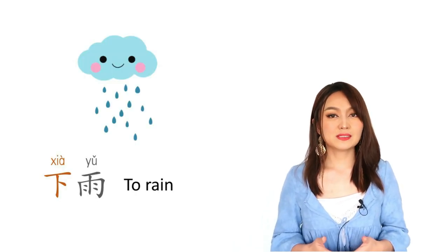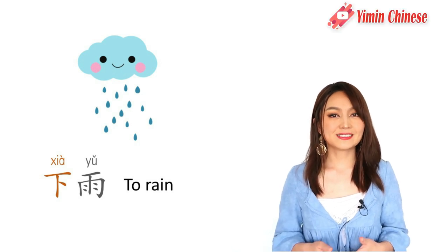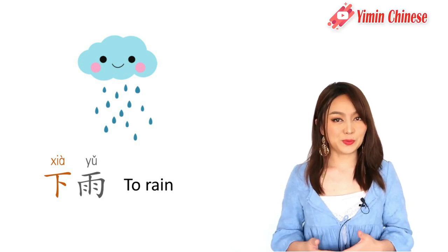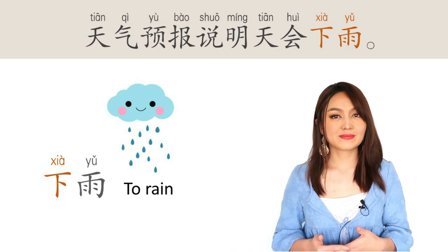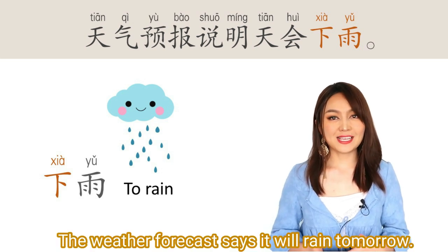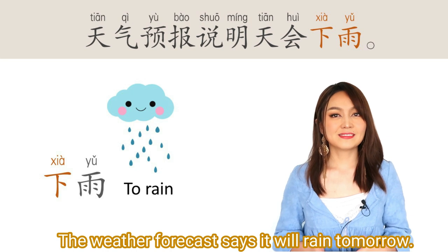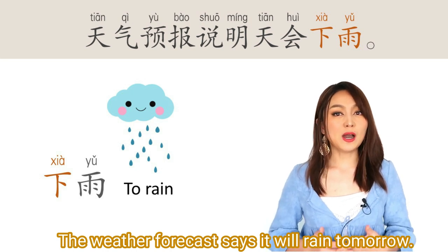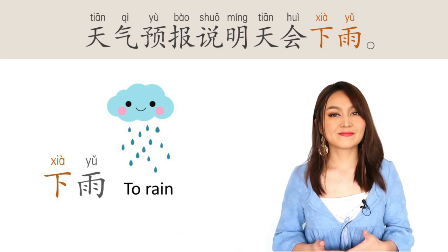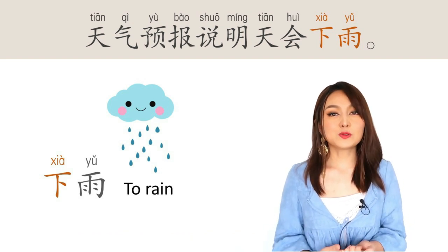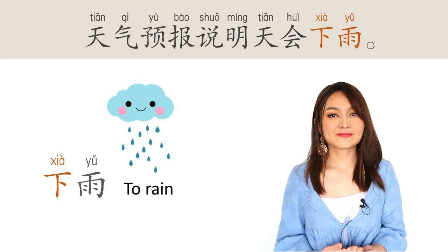下雨 — to rain. 下雨. For example: 天气预报说明天会下雨. The weather forecast says it is going to rain tomorrow.